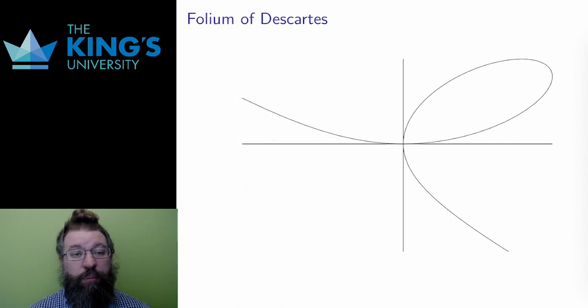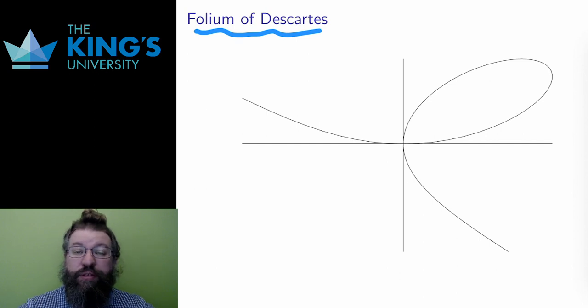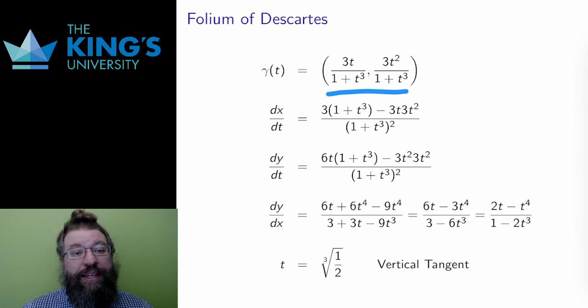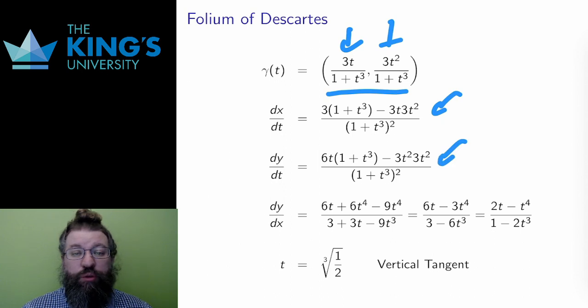This is the graph of a parametric curve called the folium of Descartes. I'll use this curve to give an example of slopes. This is the formula for the folium of Descartes. To find the slope, I need the two time derivatives, one for x and one for y. Here are those derivatives, which are both calculated by the quotient rule.